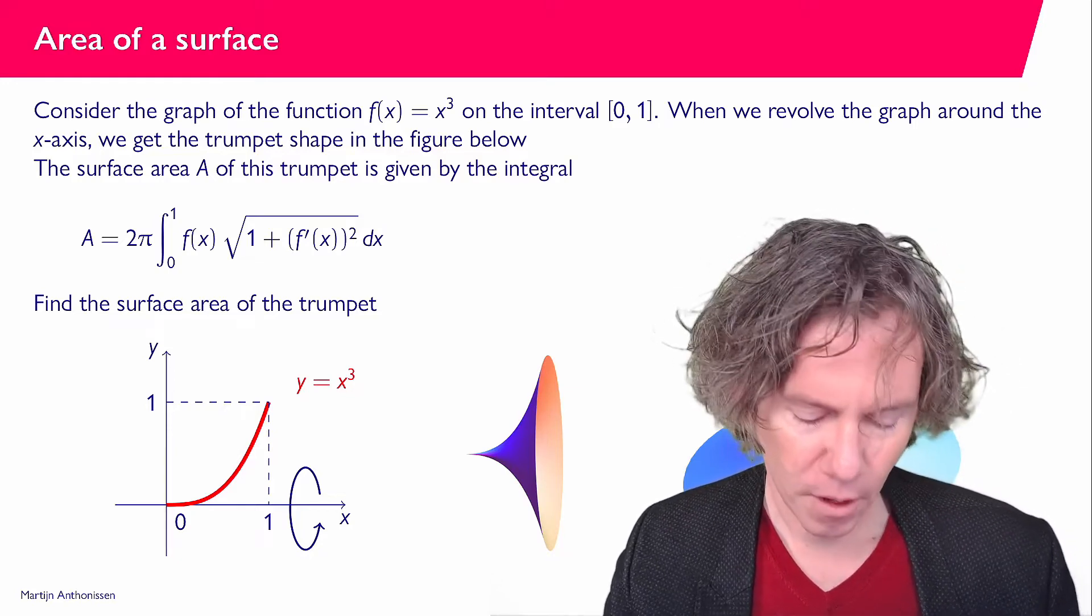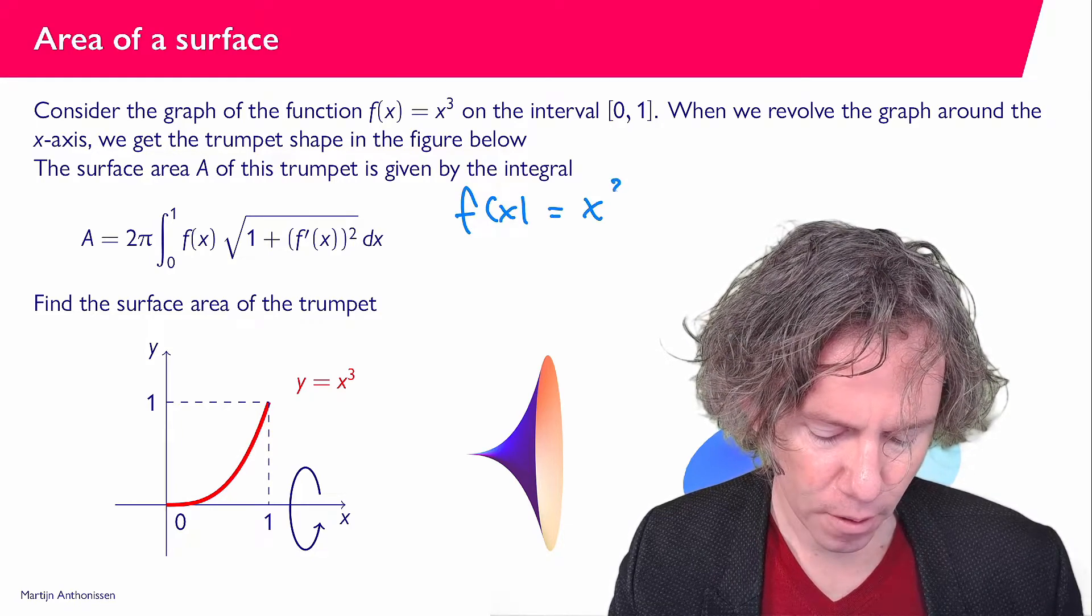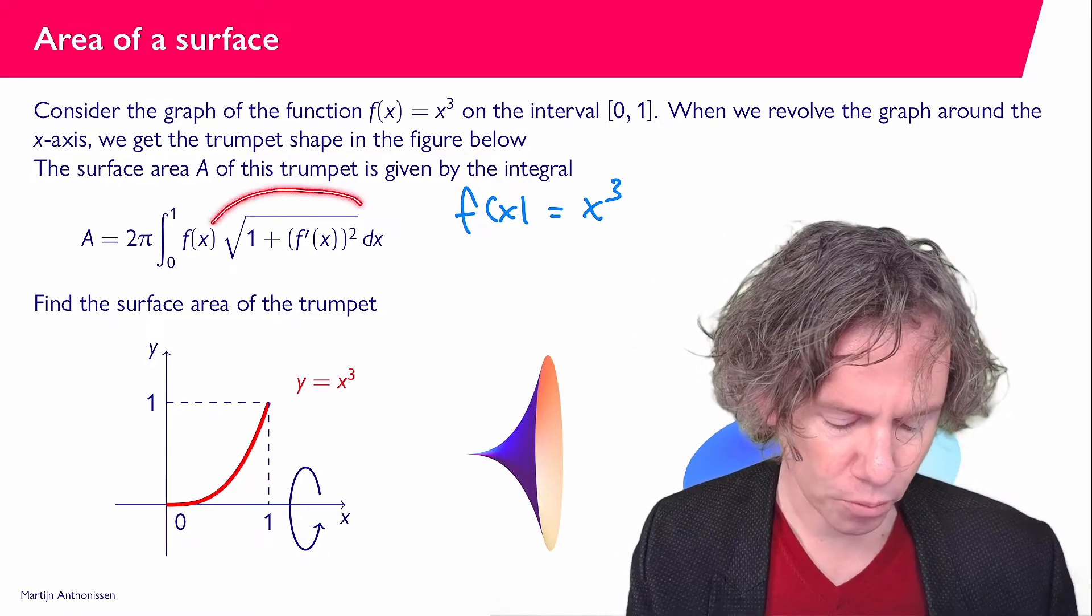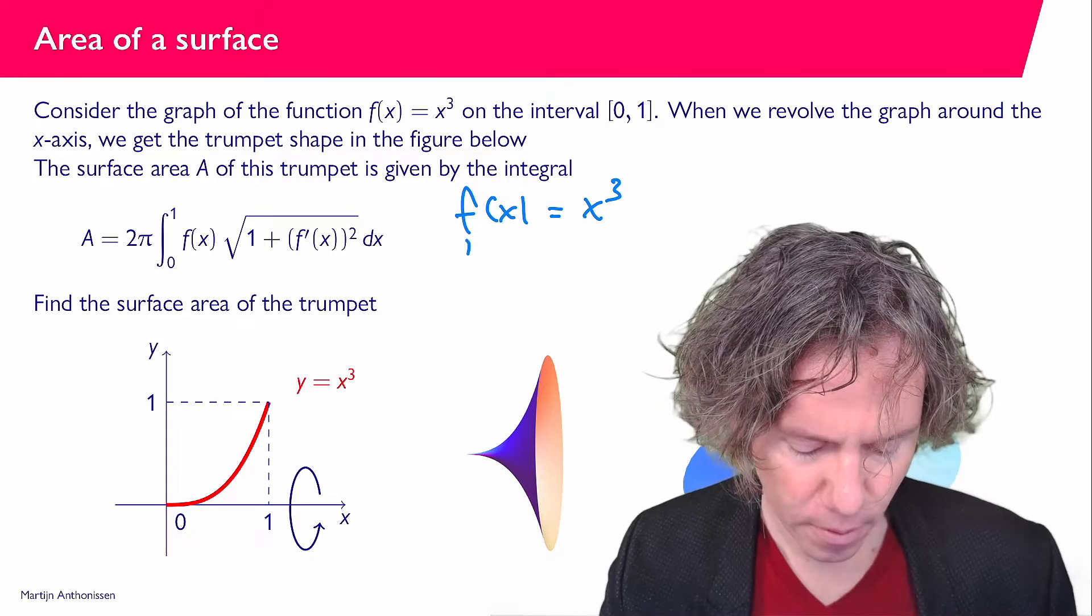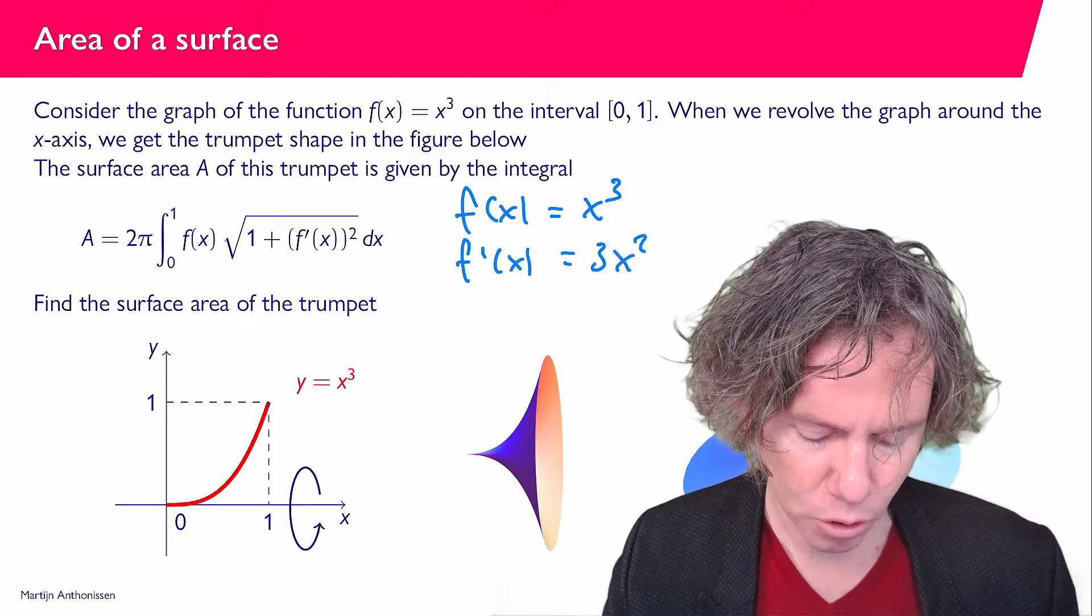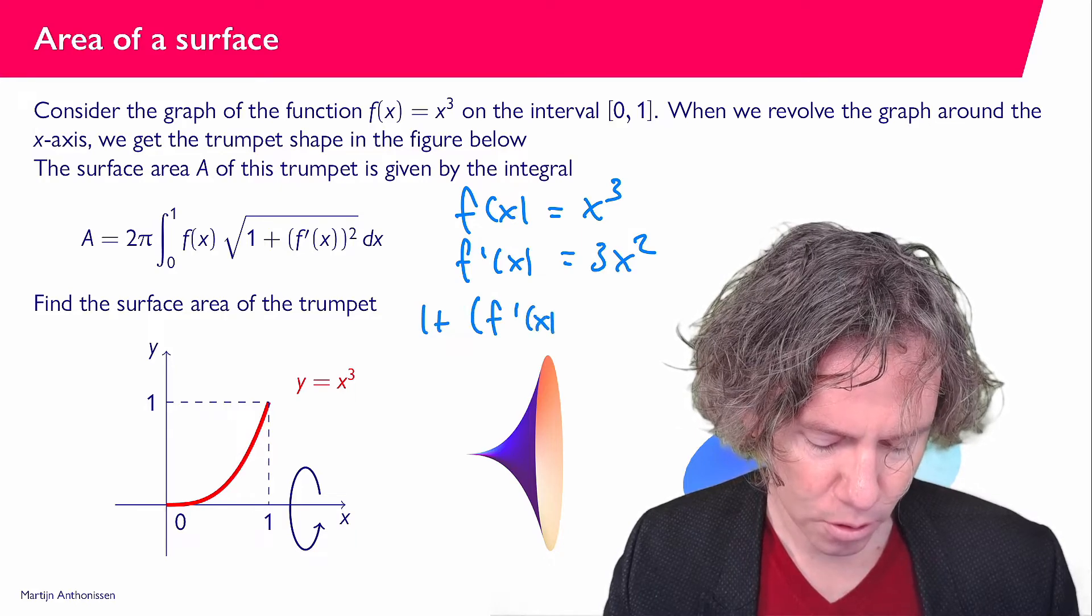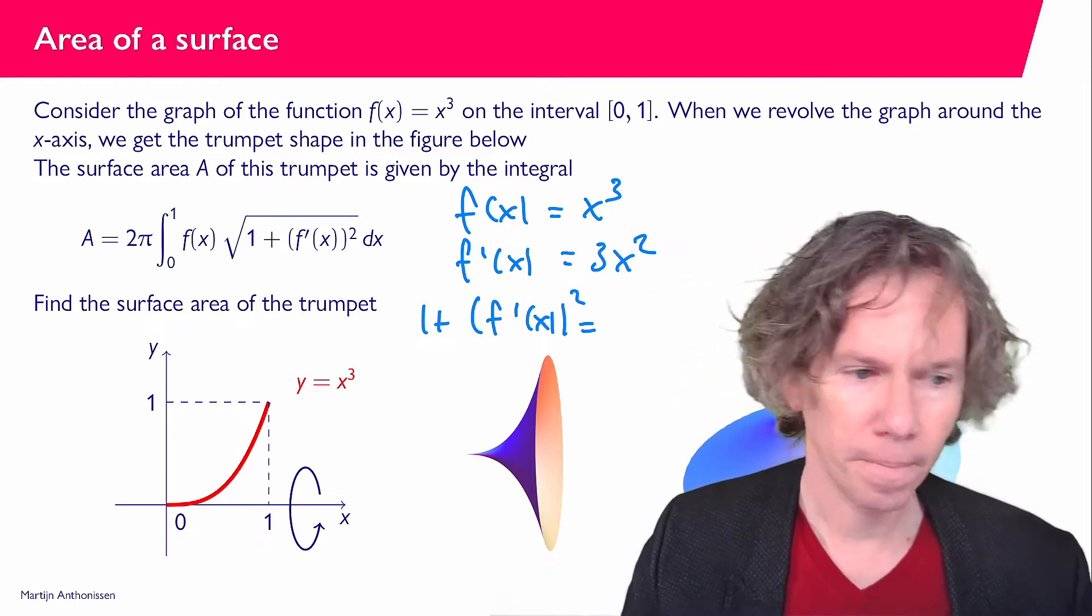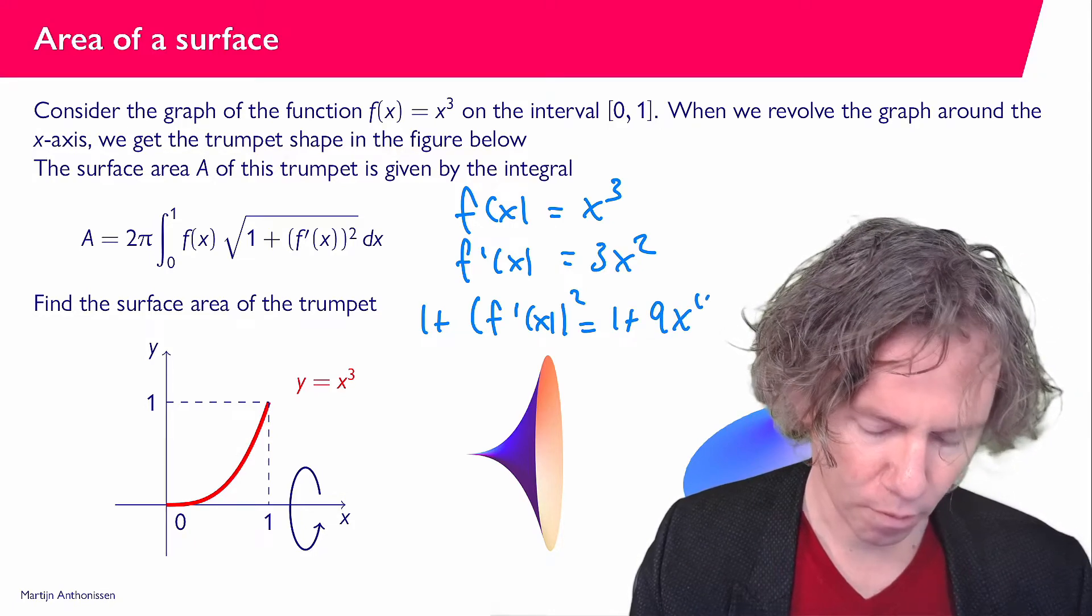Now let's look. f(x) is x to the power 3, and you see that below the square root in the integral. So here in this expression, we have 1 plus f prime squared. So we will be needing f prime. And if we differentiate the function we get 3x². So 1 plus f'(x)² equals 1 plus 9x to the power 4.